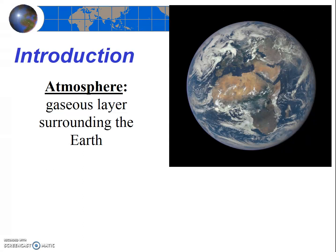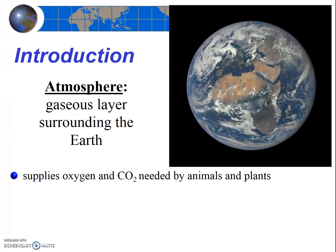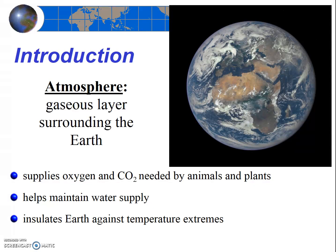So why should we care about the atmosphere? Clearly, the Earth's atmosphere is what makes life, as we know it, possible on Earth. But let's get more specific — what benefits do we derive from the atmosphere? First, obviously, it supplies the oxygen, carbon dioxide, and other gases needed by animals, plants, and other organisms. Perhaps less obviously, it helps maintain and distribute the Earth's water supply. It also insulates the Earth against extreme temperatures, and it shields us from the Sun's ultraviolet rays.